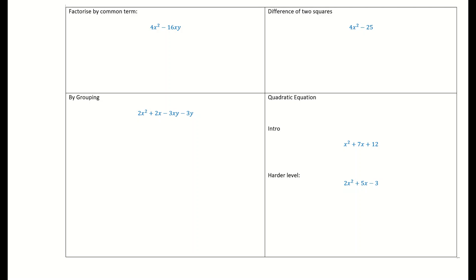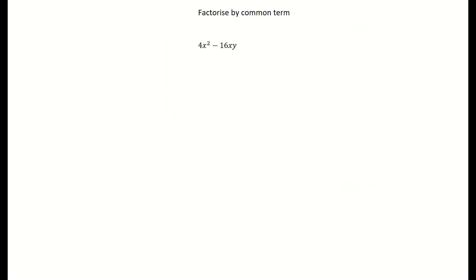Let's get started by factorizing with common terms. Here's our example: 4x squared minus 16xy — factorize. There are two terms, so I'm going to find something common to both. Looking at the numbers first: 4 and 16. What number can divide into both? You can divide by 2, but you can go for a higher factor — a factor of 4. So I'm going to factorize out the 4 from both terms.